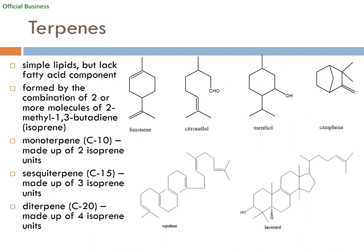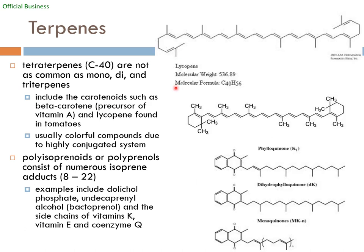Another class of lipids are the terpenes — simple lipids that lack the fatty acid component. They are hydrophobic compounds built from isoprene units. We have monoterpenes and others of varying sizes, from small to very large compounds. The commonality is that they are hydrophobic. Most of them are found as metabolites and signaling molecules.